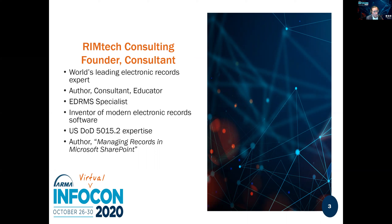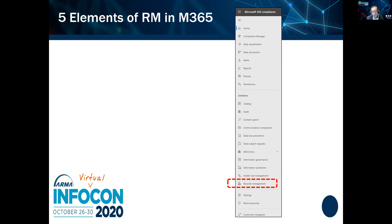This session is about what it's really like to use M365's native record keeping capabilities. There are five elements we need to cover. The records management submenu is found underneath the compliance main menu in M365. This session refers to Enterprise License 5 (EL5), the more expensive of the two M365 licenses. If you have EL3, you can purchase the records and compliance portions as an add-on rather than upgrading to EL5.